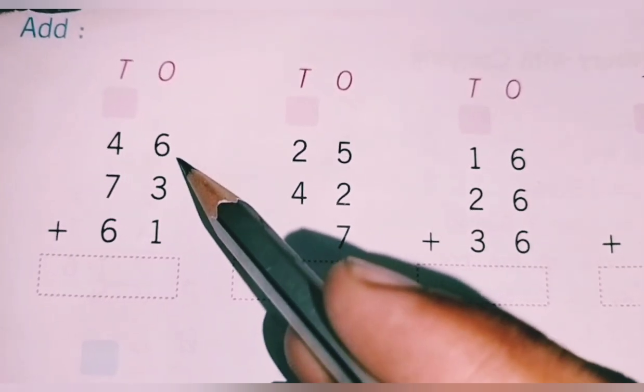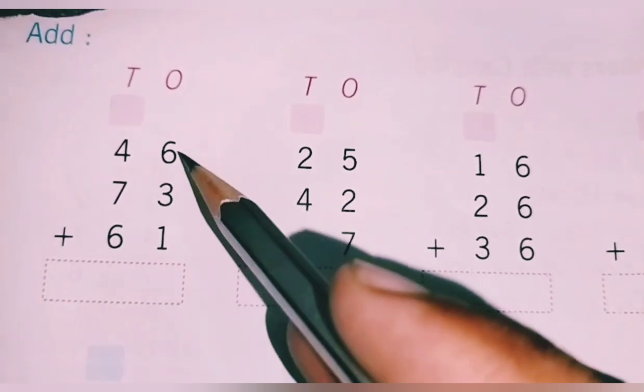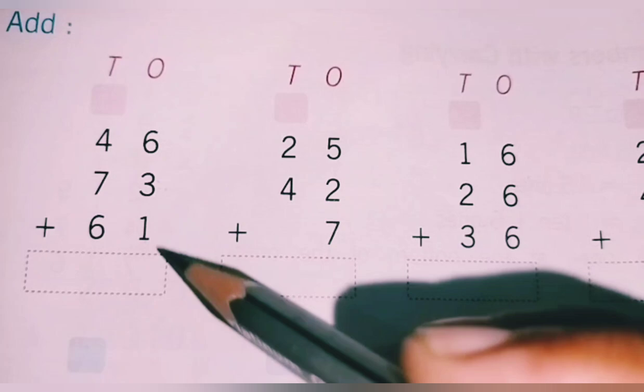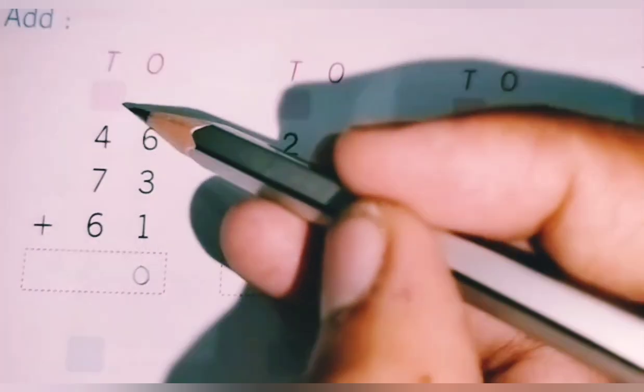Look at the price of 6. This time we will add 9. 6 plus 6 is 9. 9 plus 1 is 10. So, 0 here. 1 carry up.